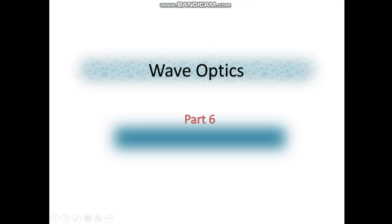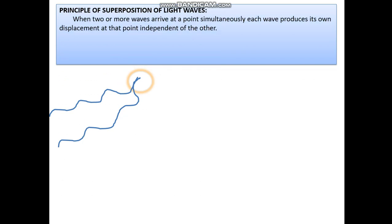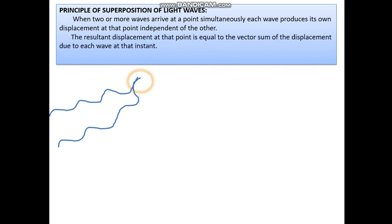Let us continue with wave optics part 6. Consider two waves interfering at a point. We understand this by the principle of superposition of light waves. When two or more waves arrive at a point simultaneously, each wave produces its own displacement at that point independent of the other. The resultant displacement at that point is equal to the vector sum of the displacement due to each wave at that instant.